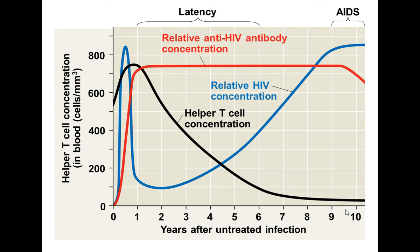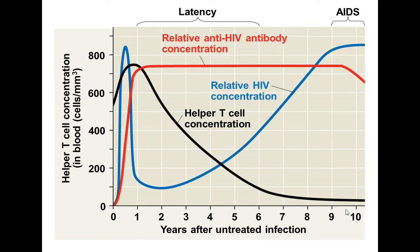Helper T-cell count is measured to determine whether a person has HIV or full-blown AIDS. When adaptive immunity is compromised, cancer frequency increases — about two out of every ten human cancers involve viruses. The immune system normally protects against cancer-causing viruses and attacks virus-infected cancer cells, which is why a vaccine for HPV, associated with cervical cancer, was developed.